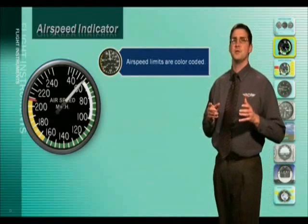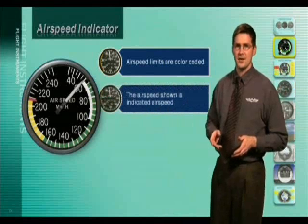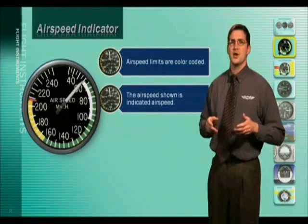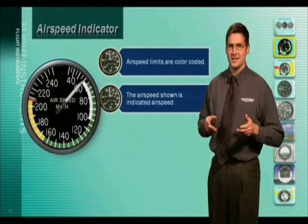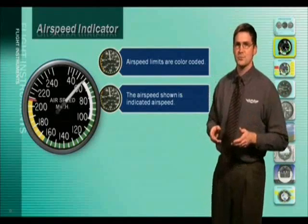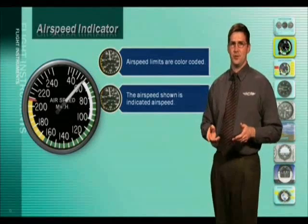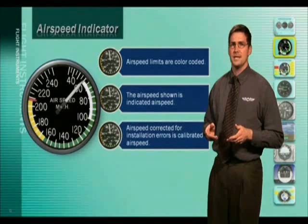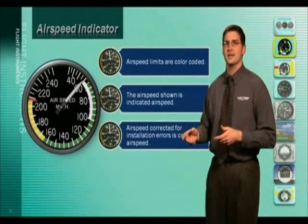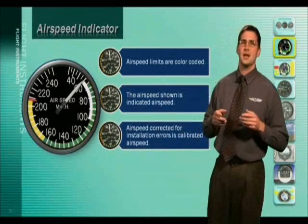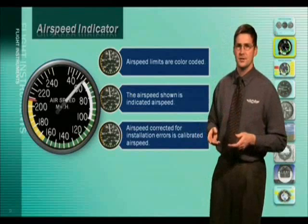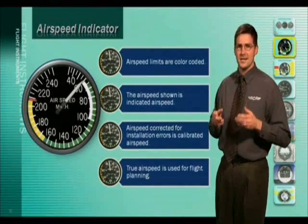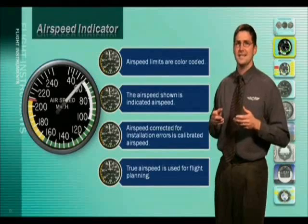The airspeed you read directly from the airspeed indicator is called the indicated airspeed. Airspeed that is corrected for installation and instrument error is called calibrated airspeed. The true airspeed of an airplane is calibrated airspeed corrected for variations in temperature and pressure. The true airspeed is used for flight planning purposes and will be discussed in greater detail in lesson nine.